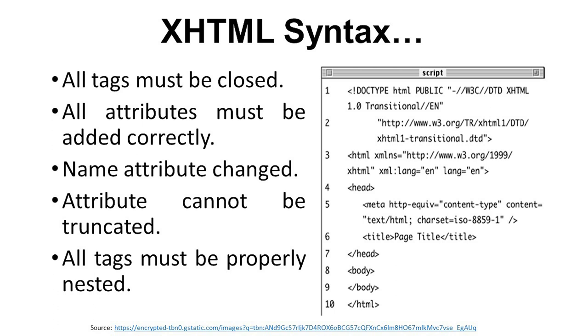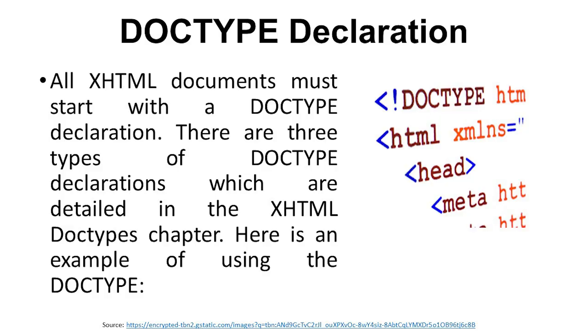All XHTML documents must start with a DOCTYPE declaration. There are three types of DOCTYPE declarations, which are detailed in the XHTML DOCTYPE chapters and will be covered later.